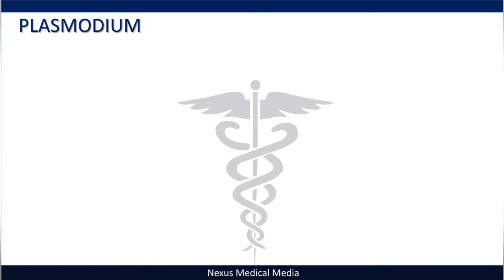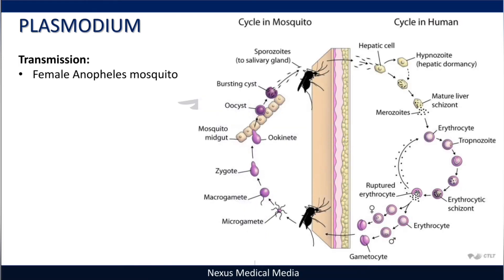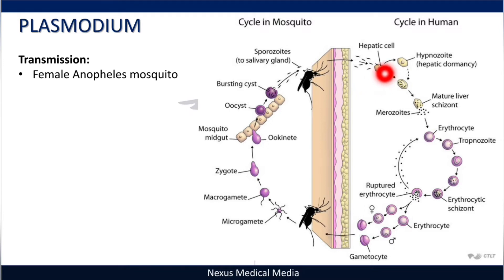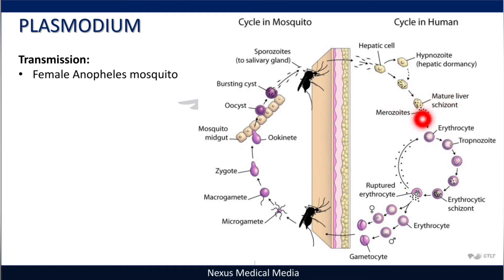Malaria is transmitted by the female Anopheles mosquito. In the life cycle, when a mosquito bites you it releases sporozoites, which enter the hepatic cells — this is the hepatic phase. Some species, specifically vivax and ovale, will form hypnozoites, lying dormant and able to re-enter the cycle later. Other species go straight from sporozoites, maturing into schizonts in the liver, which on rupturing release merozoites. Fever does not occur at this stage.